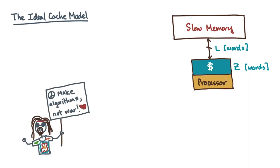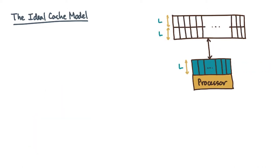Start by assuming that slow and fast memory are divided into blocks of size L words. This L is the same as the transfer size. We'll refer to one of these blocks in fast memory, or cache, as a cache line.